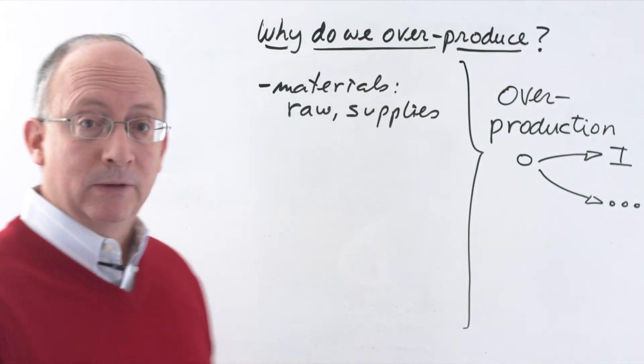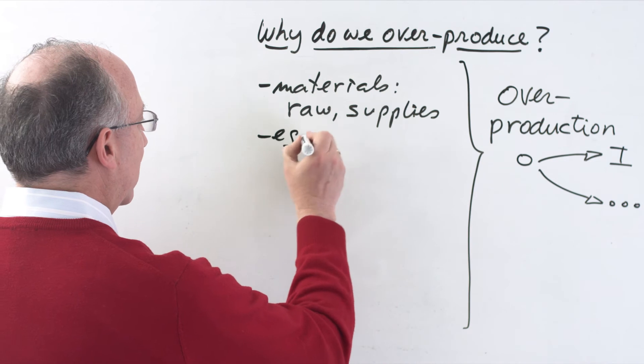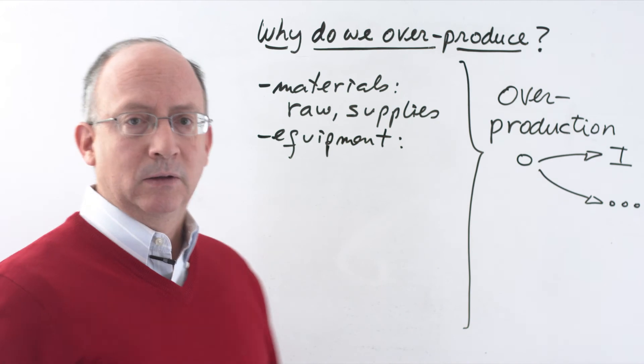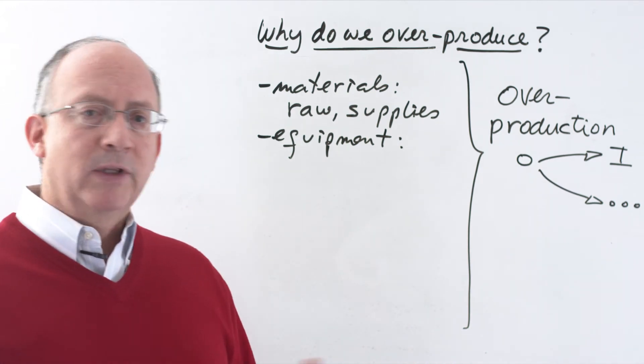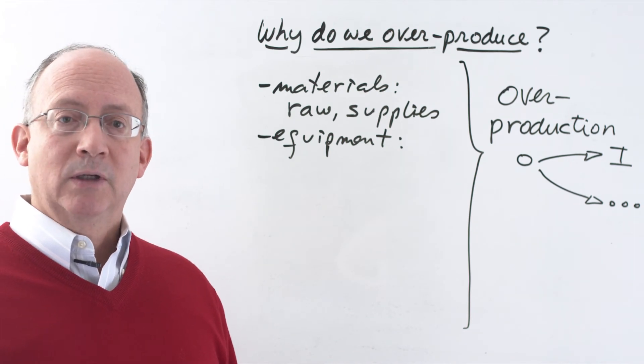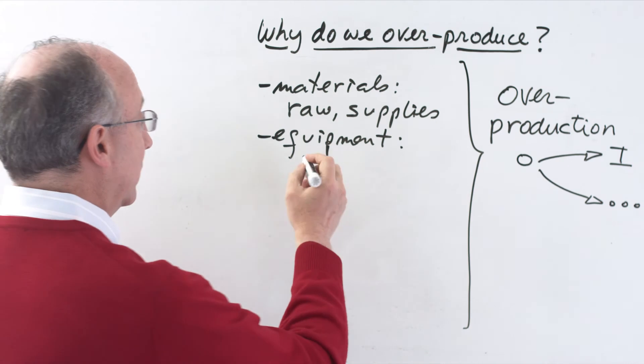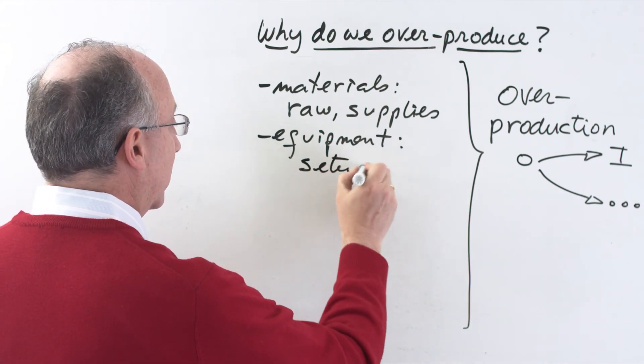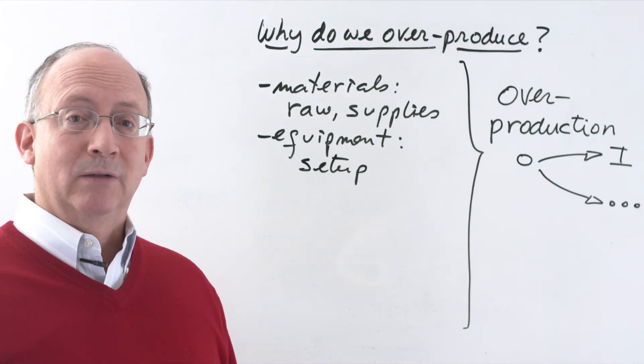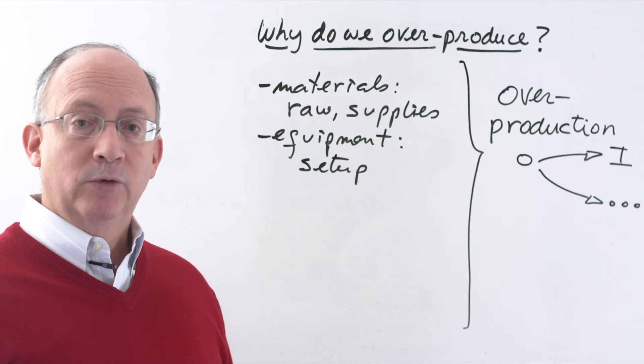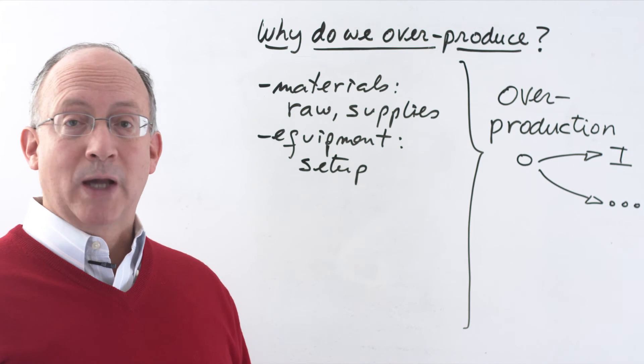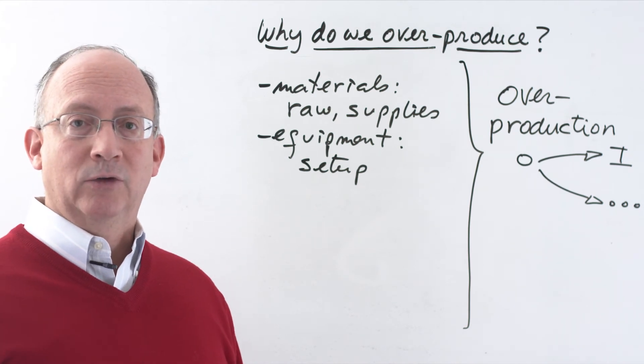Equipment may also be one of these factors that leads to overproduction. For instance, if you already have a difficult setup in place, it may seem only sensible to keep using it and make more of the product. But don't you think that this actually means that perhaps we should improve the way in which we set up the equipment? This seems almost like an example of the tail wagging the dog - a smaller factor having an influence on the larger one.